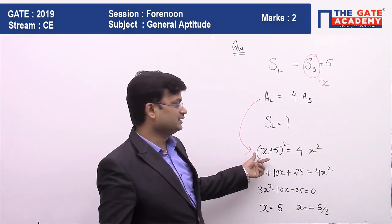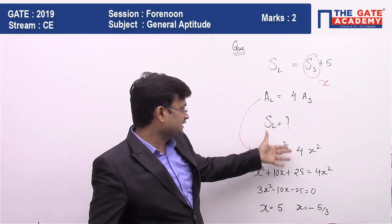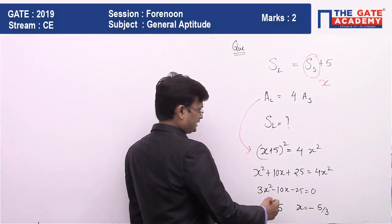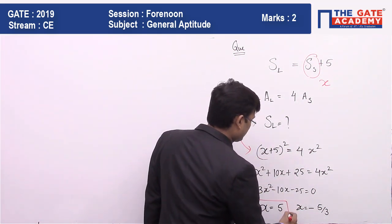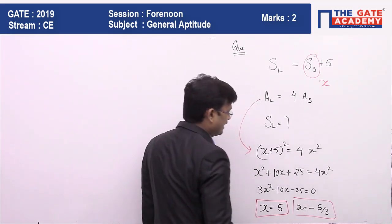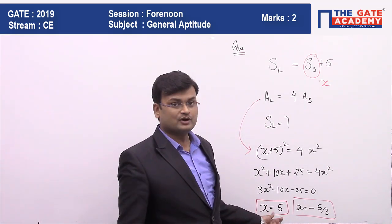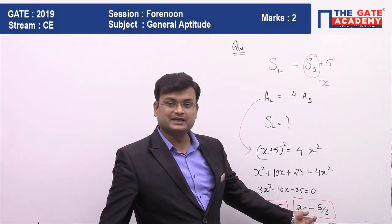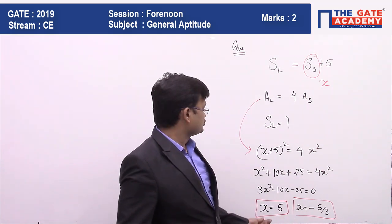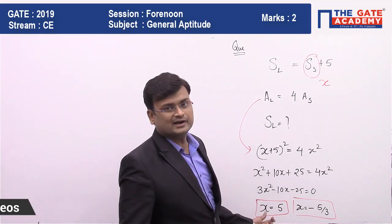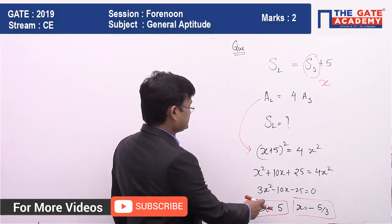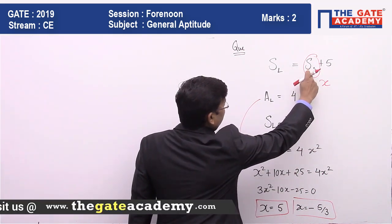I hope till here it was very simple. After simplifying you get a quadratic equation, and once you solve it you get two values — one positive and one negative. Since a side length must be positive, you discard the negative value. So the value of x is equal to 5, which is the side of the smaller square.